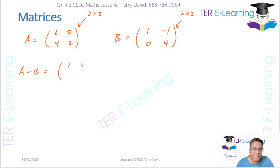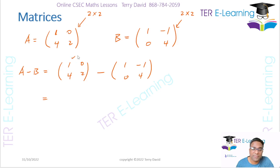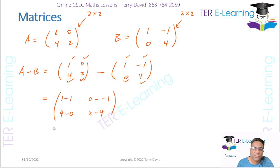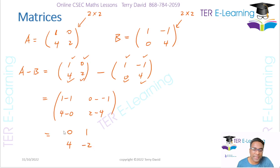So A is given by 1, 0, 4, 2, minus B, which is 1, minus 1, 0, 4. All we need to do is subtract corresponding elements. So 1 minus 1, then 0 minus minus 1, then 4 minus 0, and then 2 minus 4. So 1 minus 1 gives me 0. 0 minus minus 1 is the same as 0 plus 1, so that's 1. 4 minus 0 is 4. And 2 minus 4 is minus 2. So this is what I get when I subtract these two matrices.